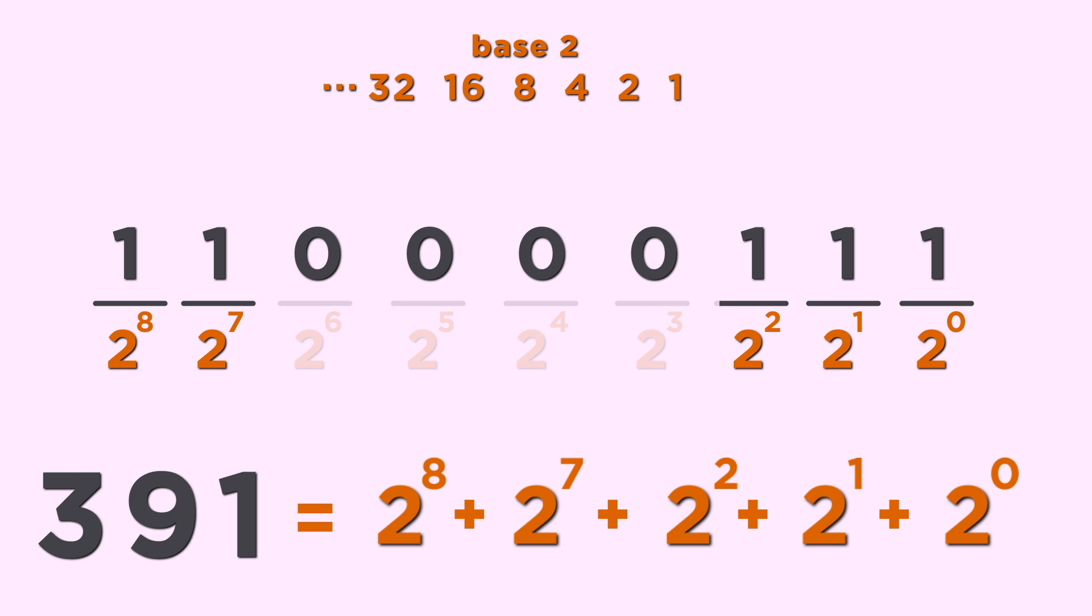Bits, the basic unit of a computer, have two distinct states, usually represented as 0 and 1, which makes it very natural to represent numbers in binary.